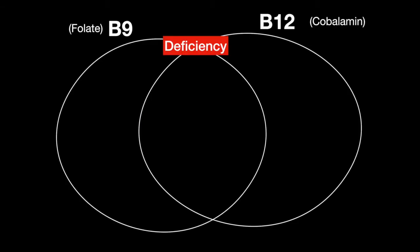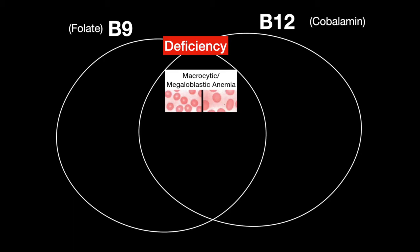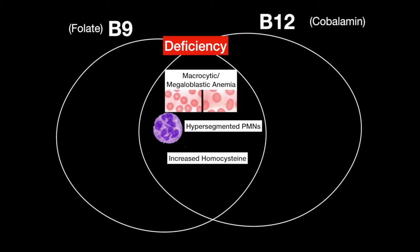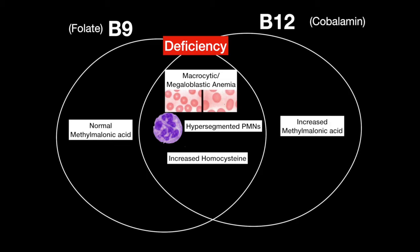In both B9 and B12 deficiency, they present with macrocytic megaloblastic anemia and hypersegmented polymorphonuclear cells. However, while B9 lab results show an increase of homocysteine and normal methylmalonic acid levels, a B12 deficiency shows an increase in both homocysteine and methylmalonic acid levels, combined with stage 2 folate deficiency.